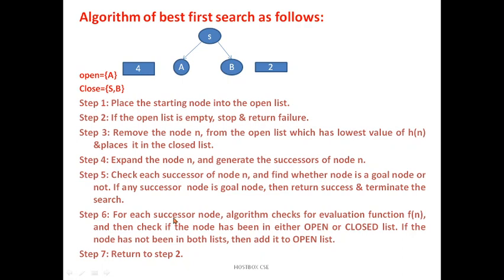Step 6: For each successor node, algorithm checks for evaluation function f(n), and then check if the node has been in either open or closed list. If the node has not been in both lists, then add it in the open list. Step 7: Return to step 2.